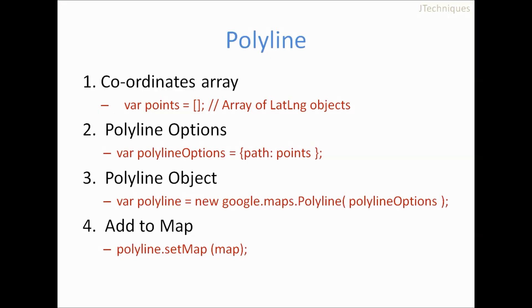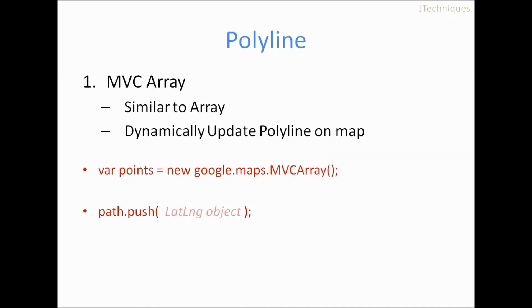And the next thing we have to look at is something called MVC array. MVC array is something for Google Maps. It's very similar to normal array. The only advantage is that when you update this array dynamically this is updated in the map as well. This allows us to instantly change our polyline on the map. Let's look at the example.